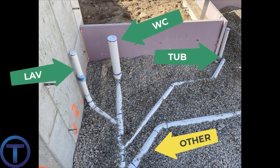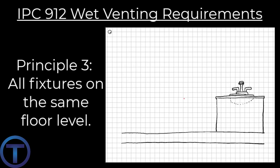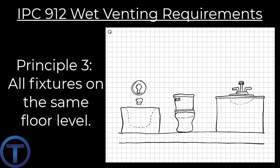Vertical wet vent principle two: the drain pipe is also considered a vent pipe from the dry vent connection down to the lowest fixture drain connection. This means that the drain is serving both as a drain and a vent.